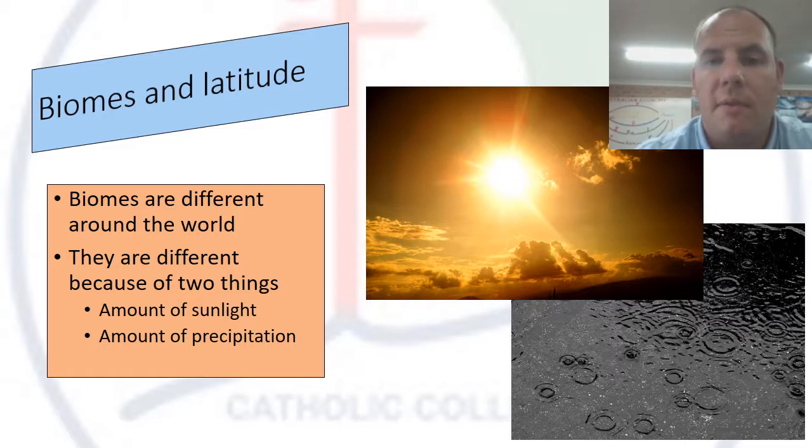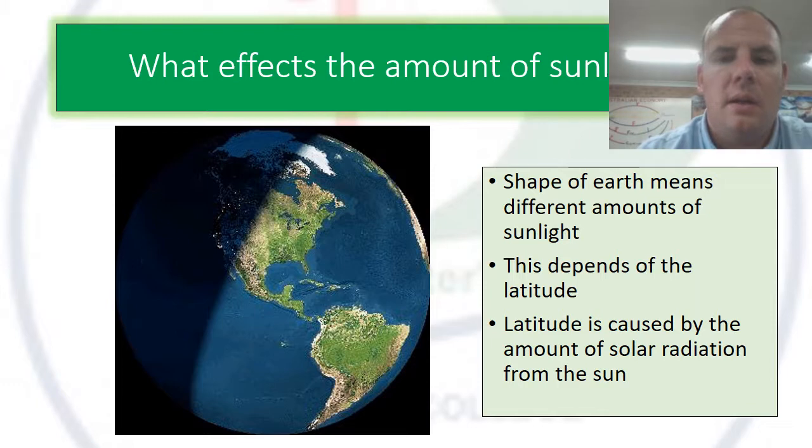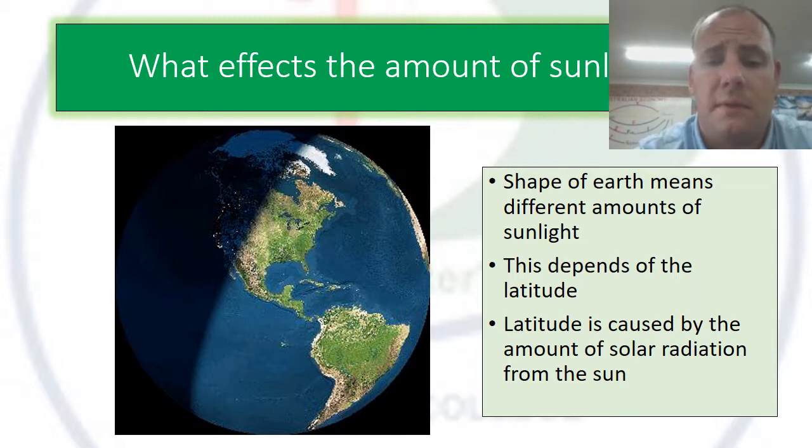When we're looking at the amount of sunlight, we're basically talking about latitude. Because of the shape of the earth, different parts of the earth get different amounts of sunlight, and we call this latitude. It's caused by the amount of solar radiation from the sun. Obviously, the middle part of the earth—zero degrees at the equator—